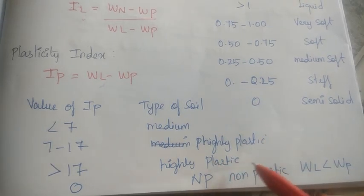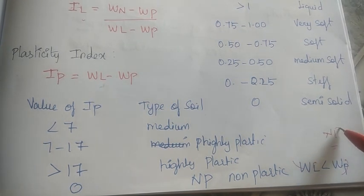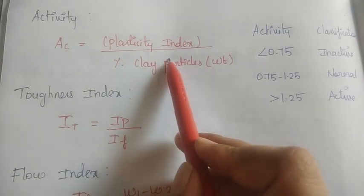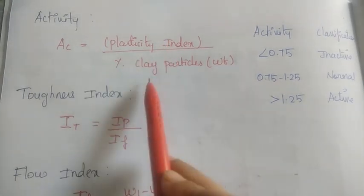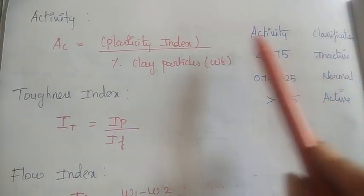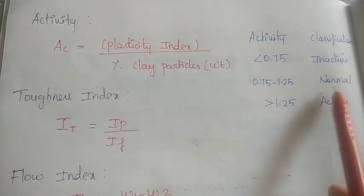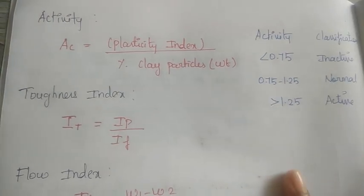The next one is the activity index. Activity index is equal to plasticity index divided by the percentage of clay particles (by weight). The clay reacts with water based on activity. If activity is less than 0.7, it is inactive. The range 0.7–1.25 is normal. Above that is active. Black cotton soil is very active.